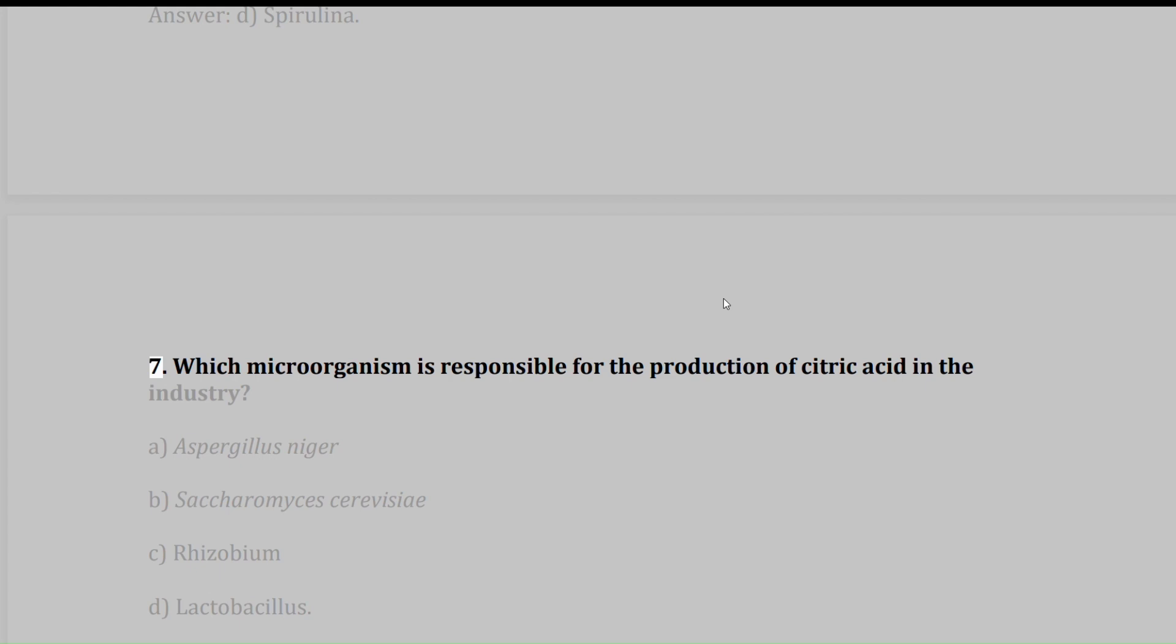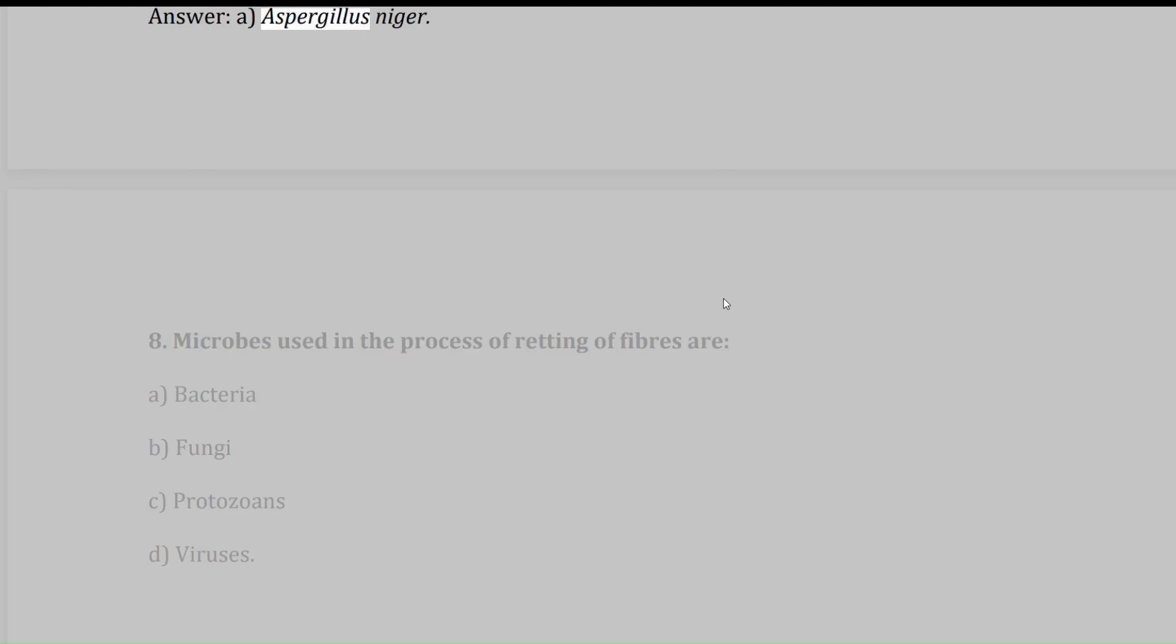7. Which microorganism is responsible for the production of citric acid in the industry? A. Aspergillus niger, B. Saccharomyces cerevisiae, C. Rhizobium, D. Lactobacillus. Answer: A. Aspergillus niger.